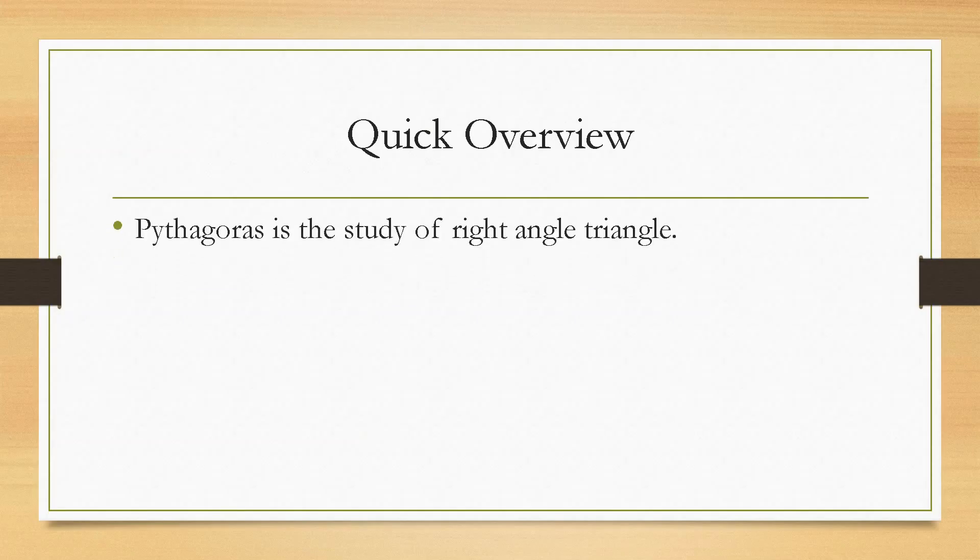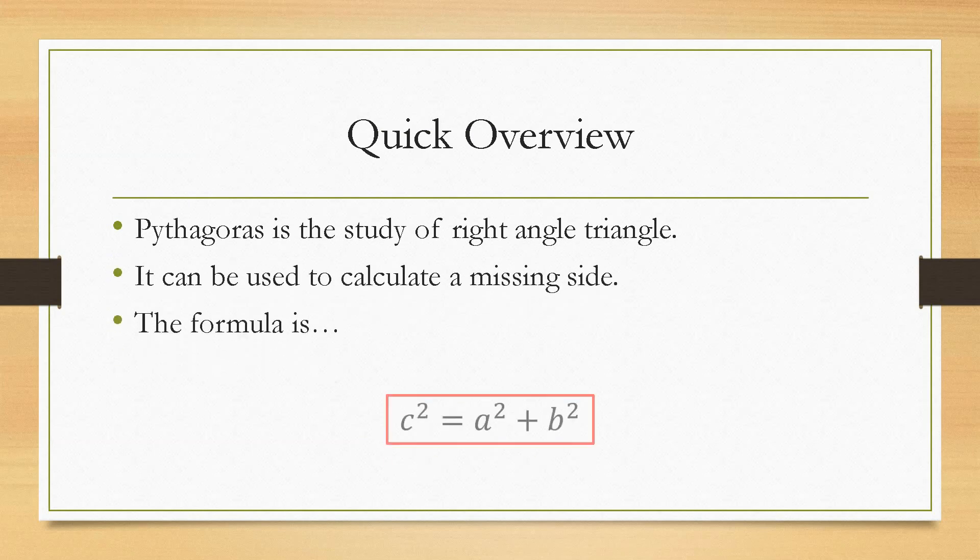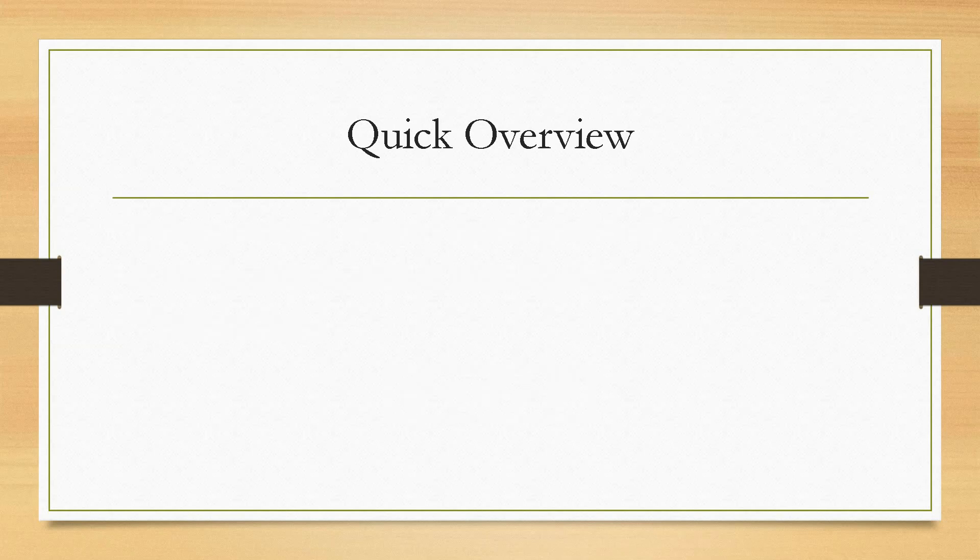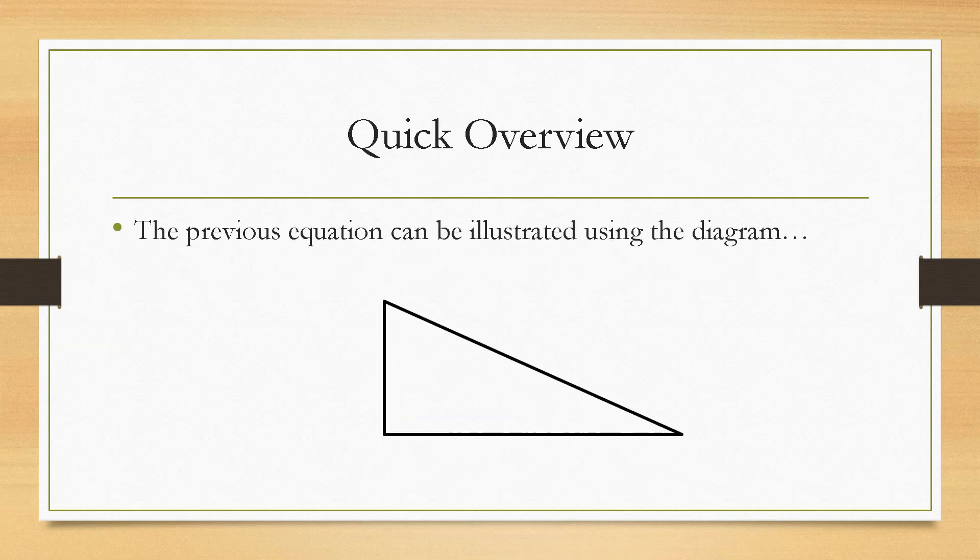So, Pythagoras is basically the study of right angle triangles and it can be used to find any missing side. The formula that we need to use is c squared equals a squared plus b squared. Now the way this looks on a triangle is like so.